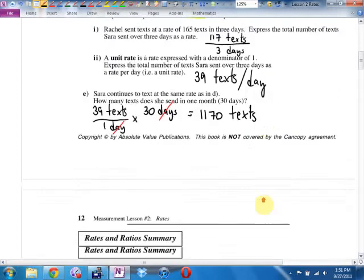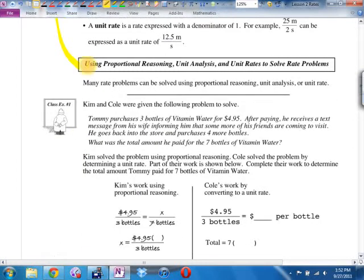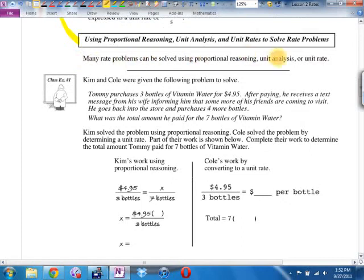Turn the page. This page right here where it says rates and ratio summary would be a good one to either dog ear the corner or put a little post-it note there. When you're studying for this unit test, this would be one of those where you would say I better read this and make sure I know all this because this is a summary. One of the things I do like about these books is they have summaries fairly frequently. Then we're going to change gears a tiny bit. Using proportional reasoning, unit analysis, and unit rates to solve rate problems.